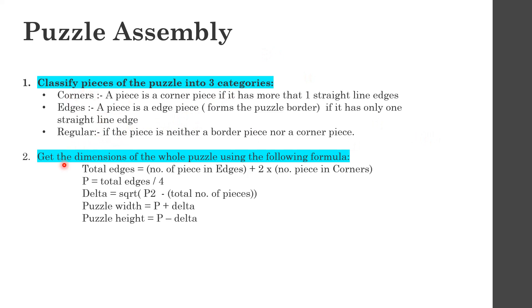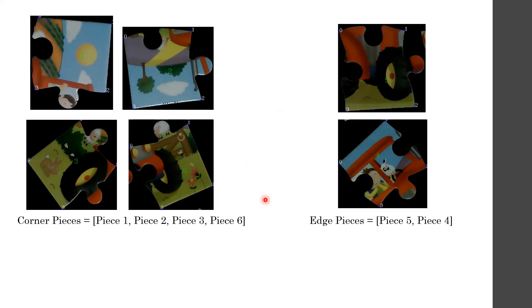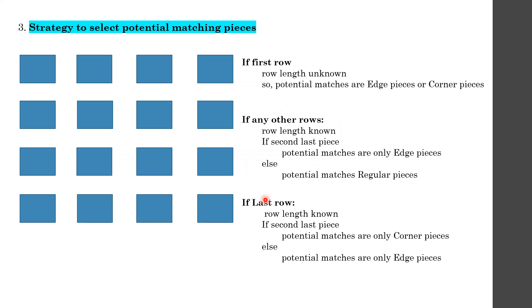With this information we can calculate the puzzle dimensions — width and height. When assembling, we always start from row 1, piece 1, which is always a corner piece. Initially the row length is unknown, so potential matches for all pieces in row 1 are either edge pieces or corner pieces. For the last row, once the row length is known, if the piece being considered is the second-to-last piece, potential matches are only corner pieces; otherwise only edge pieces.